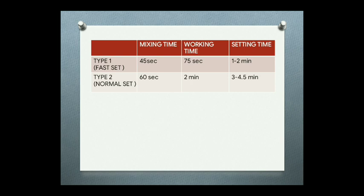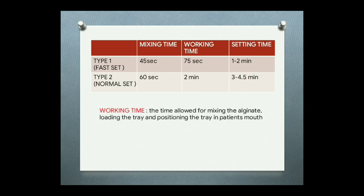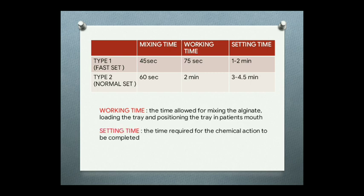Mixing time for Type 1 (fast set) is 45 seconds and for Type 2 (normal set) is 60 seconds. Working time — the time allowed for mixing the alginate, loading the tray, and positioning the tray in the patient's mouth — is 75 seconds for Type 1 and 2 minutes for Type 2. Setting time — the time required for the chemical action to be completed — is 1 to 2 minutes for Type 1 and 3 to 4.5 minutes for Type 2.